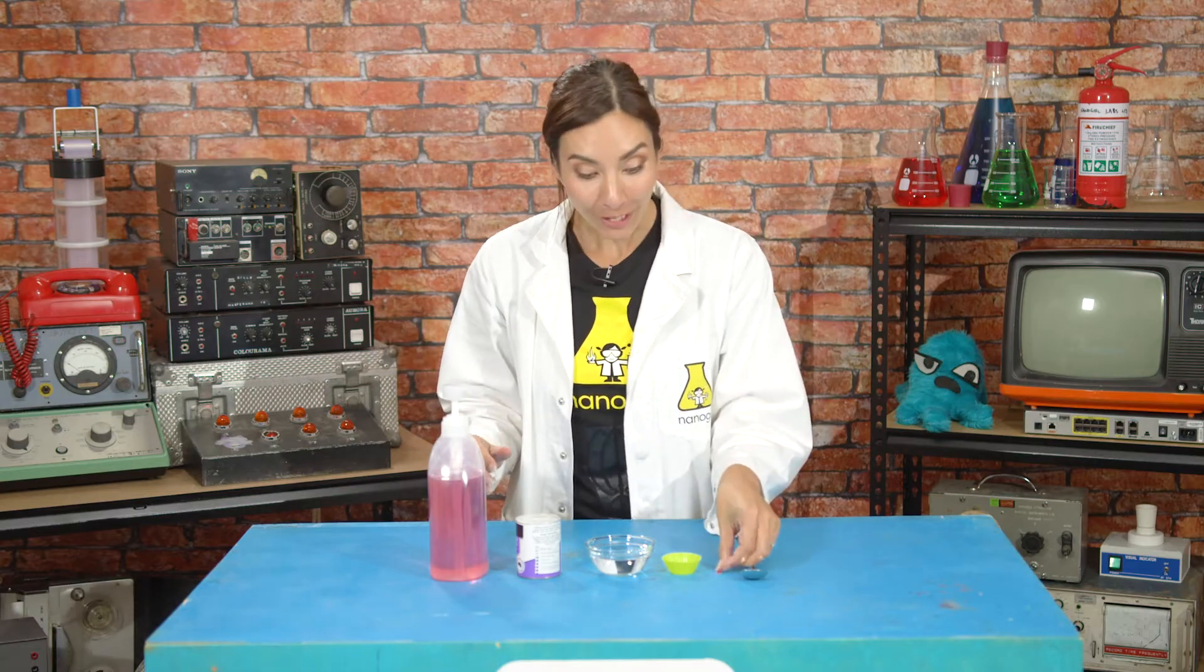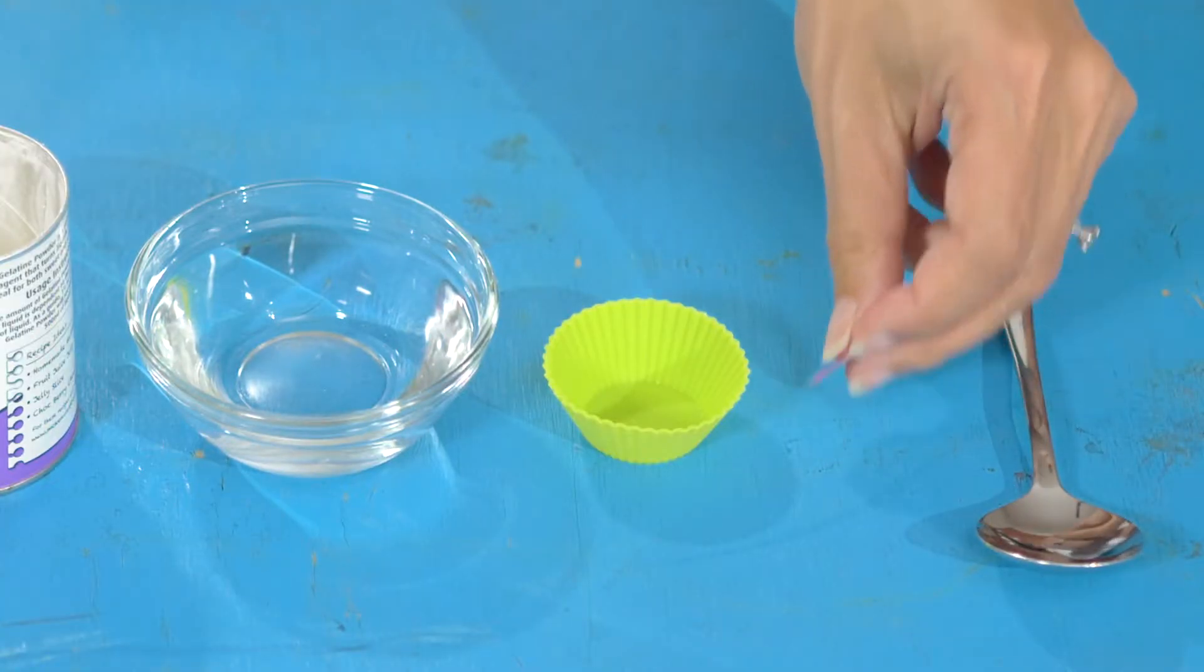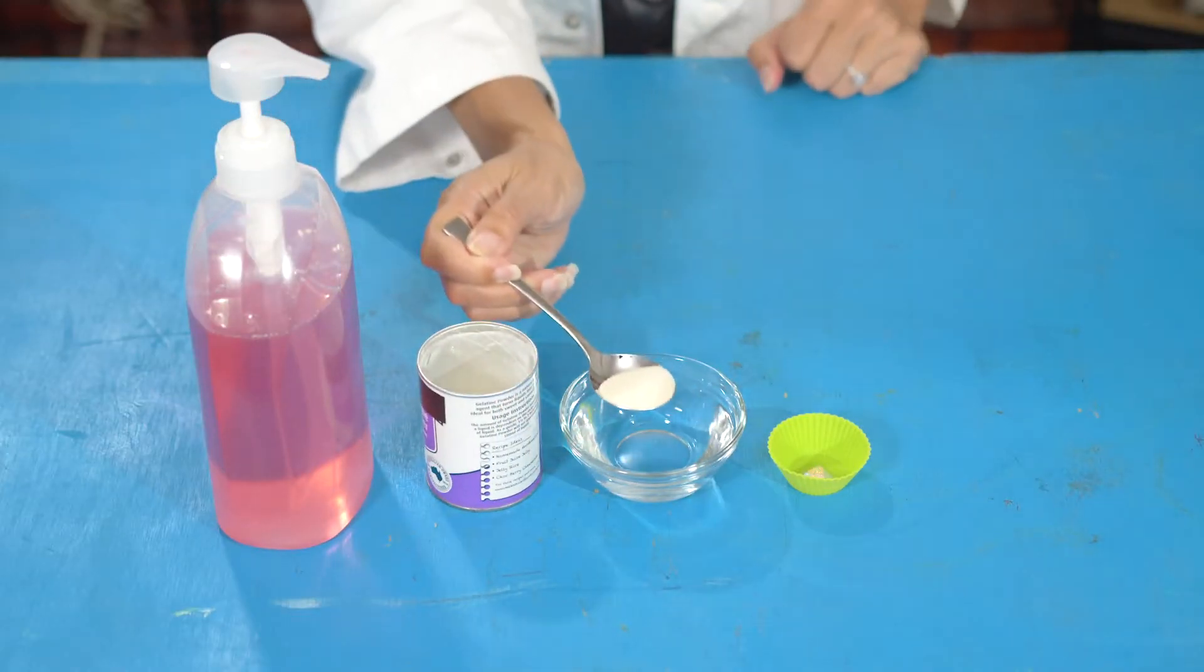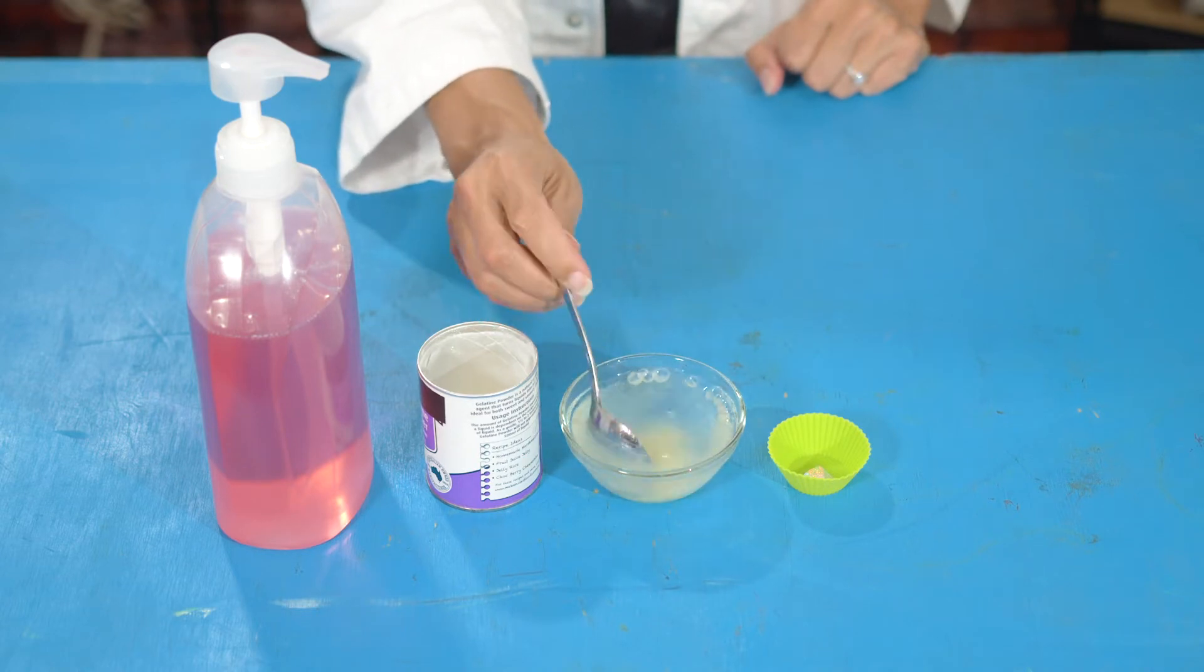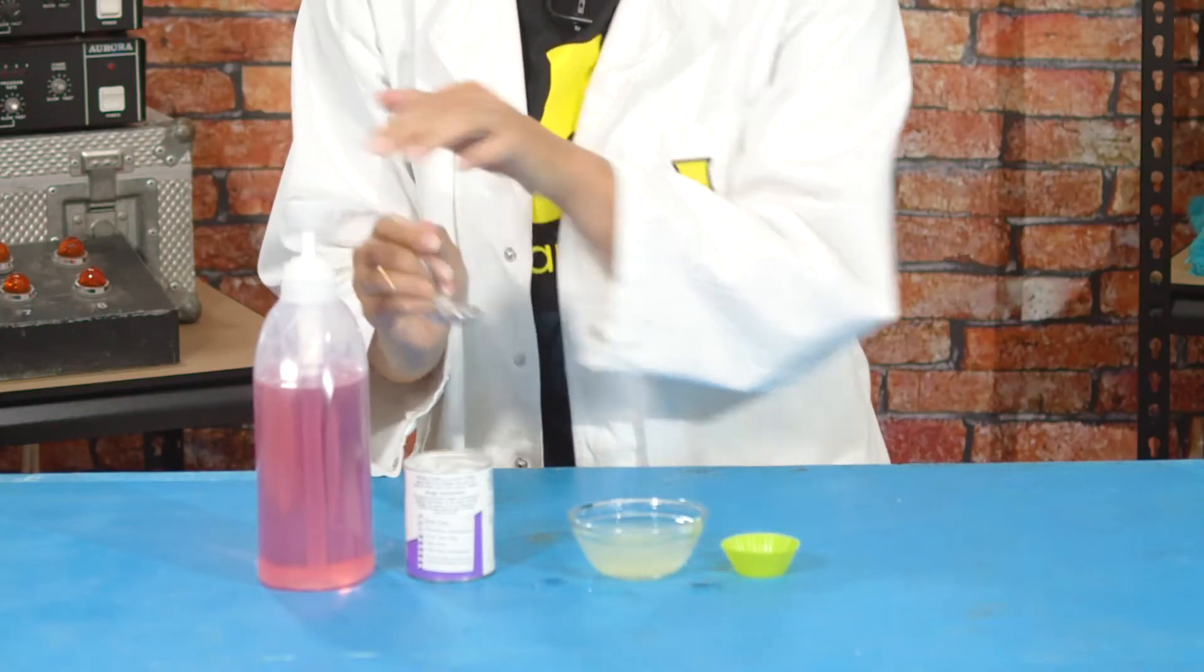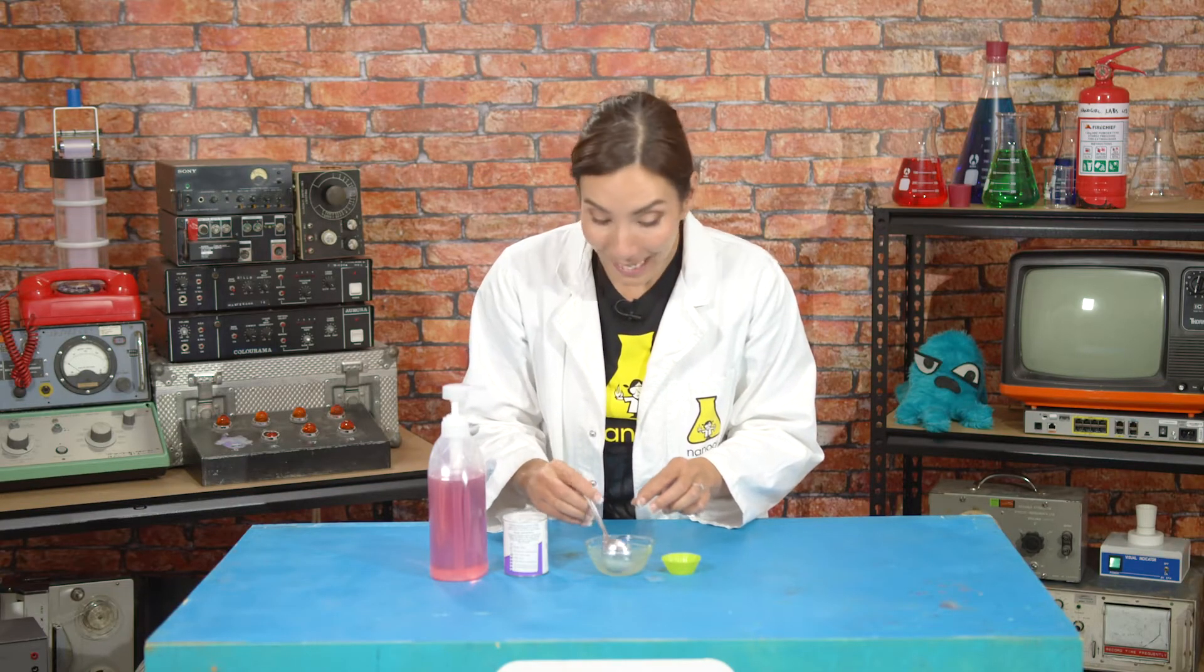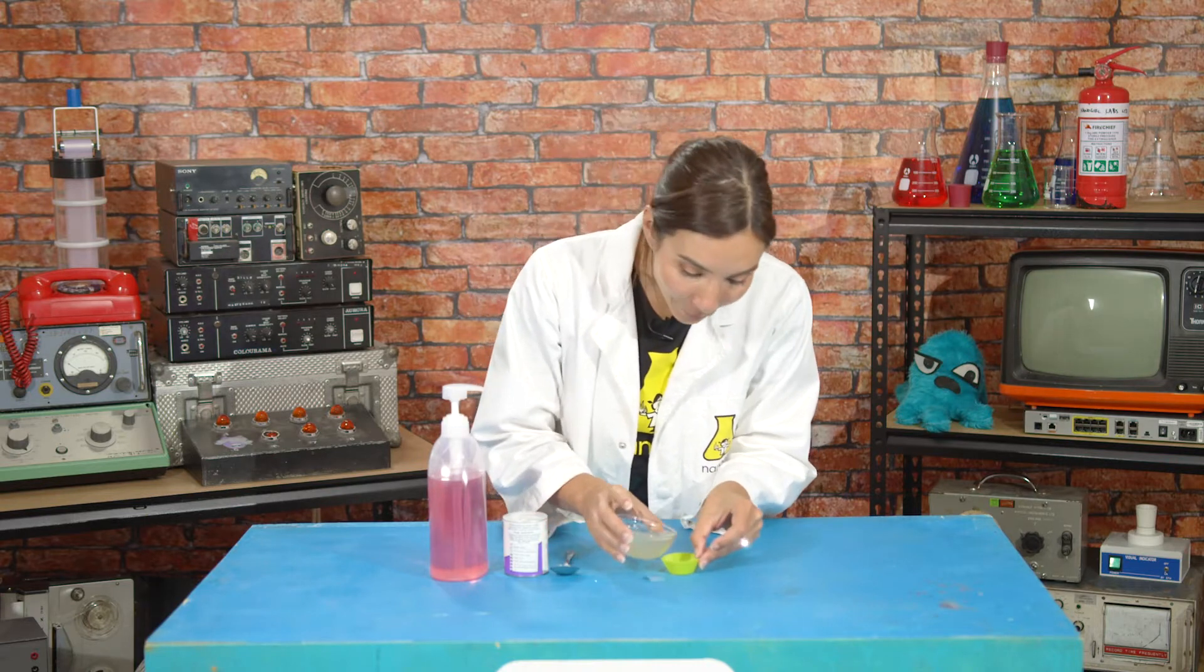To make this soap you're going to have to take your favorite sticker and put it upside down in your muffin tin, and then take one or two teaspoons of gelatin and pour it into 200 milliliters of hot water. Give it a good stir until it's all dissolved. Now once it's dissolved you're going to add 50 milliliters of soap and stir it all up. Okay we're going to stir it all in and then you're going to pour that into your muffin tray and you're going to leave it overnight in the fridge.